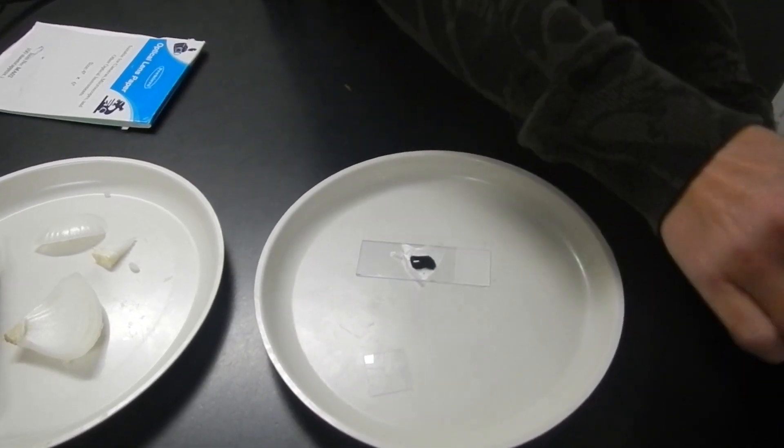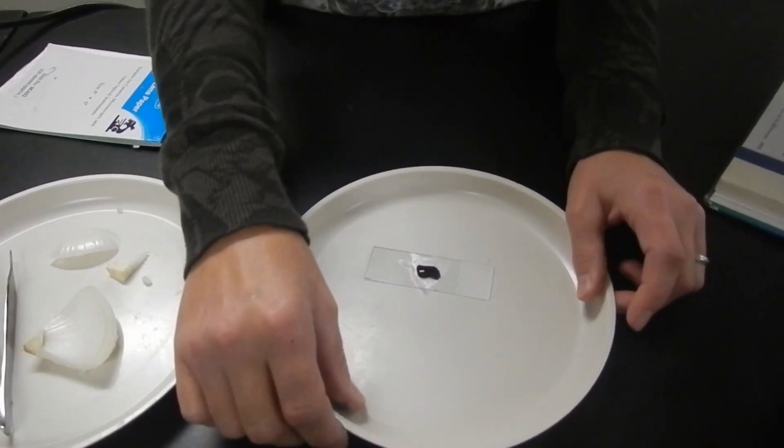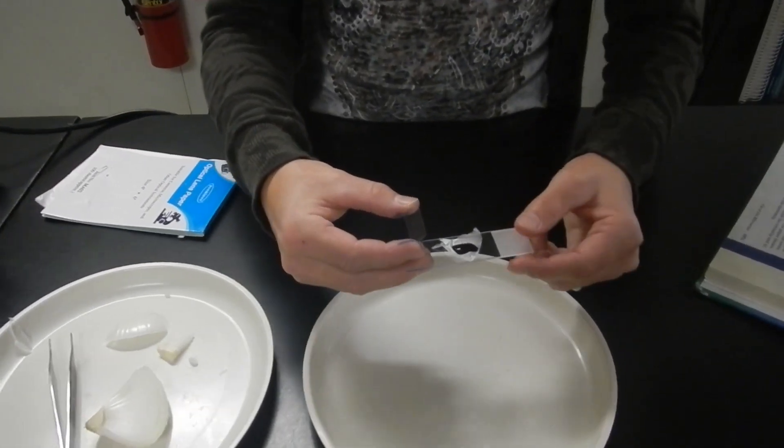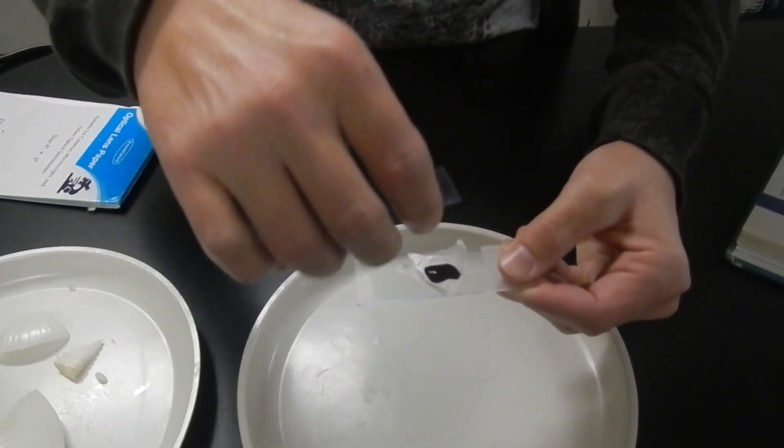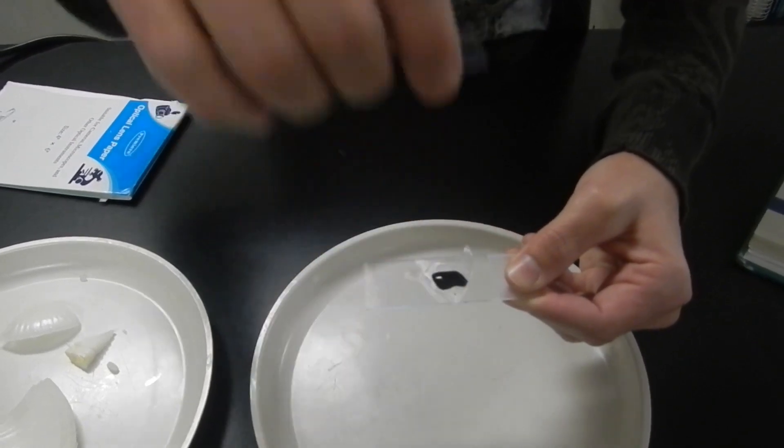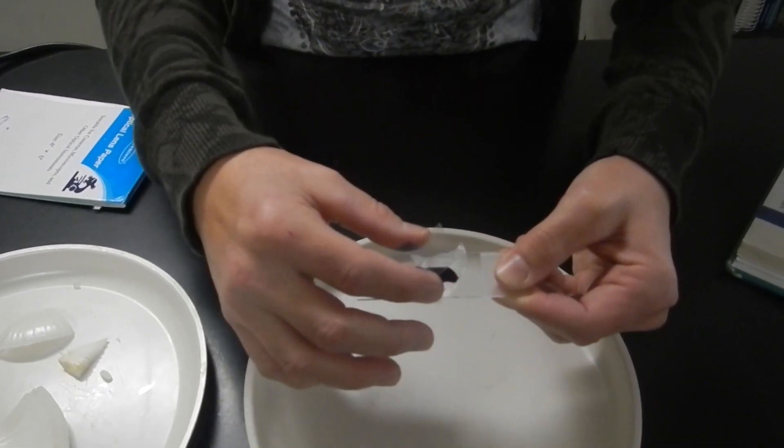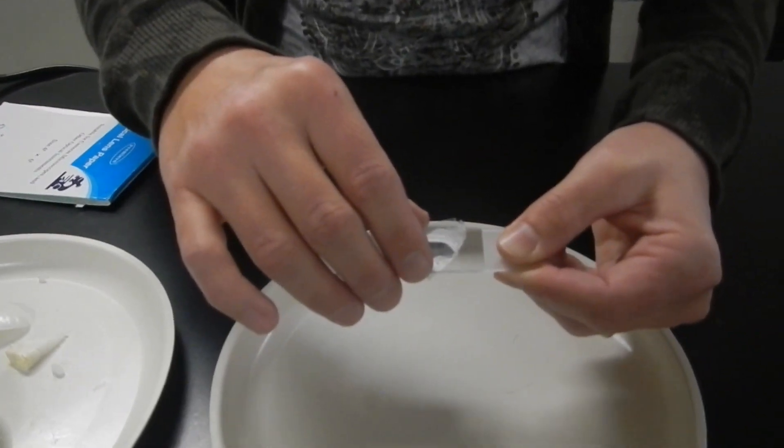Alright, my next step after I place that stain is I need to put a cover slip on top of my slide. Now this is a tricky part because we don't want to just put the cover slip on straight up and down. We want to come down at a 45 degree angle and that's going to eliminate some of the air bubbles that you might get.